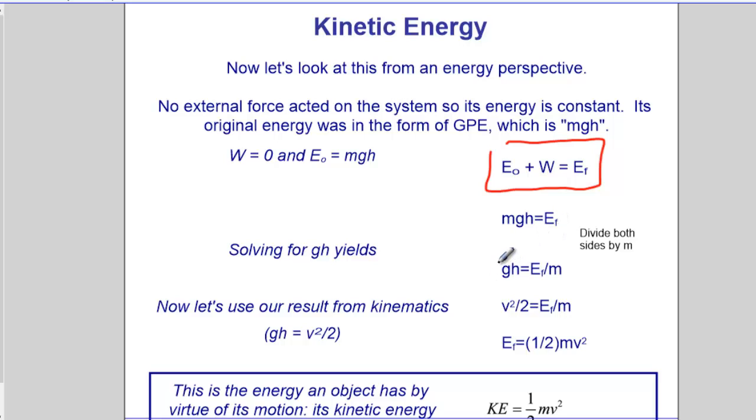If we solve this for GH, we'll end up with E over M. And there it is, our friend who was on the back burner. We can use this. GH is also V squared over 2. So where GH was, now we can sub in V squared over 2. So V squared over 2 is equal to that final energy, we don't know what it is, over M.